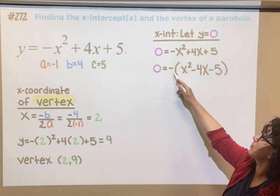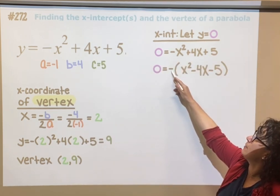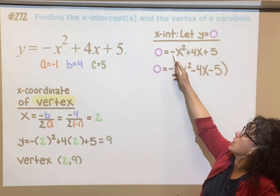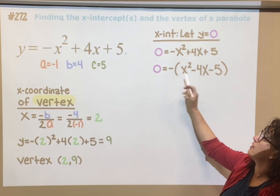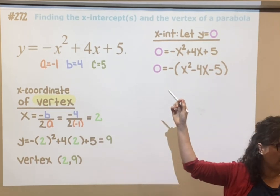So I'm going to start by factoring out a negative, changing the sign of each one of those. So now it's positive, negative, and negative. Let's just redistribute to verify.